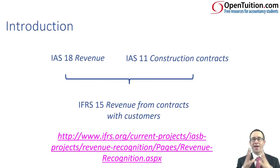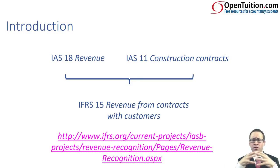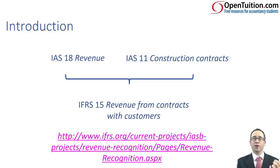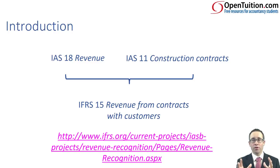We now have IFRS 15, which is the examinable standard. The two old standards that are no longer in existence are IAS 18 Revenue and IAS 11 Construction Contracts. Essentially, IFRS 15 is a hybrid — it brings together the two, using a more detailed set of principles to cover both of those accounting areas. Whether your sales relate to the sale of goods, the provision of services, or constructing an asset under a contract, IFRS 15 will cover all of those aspects following the same specific rules.